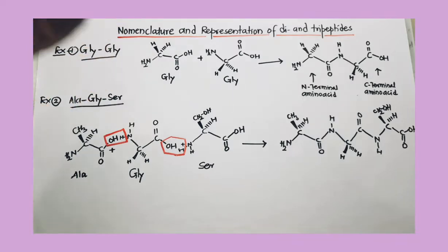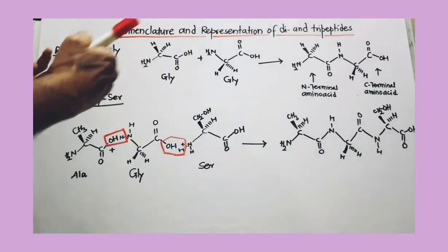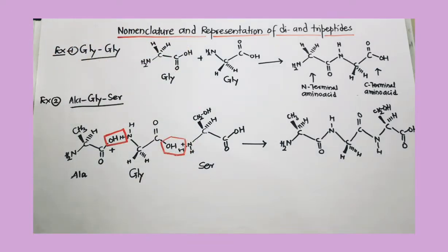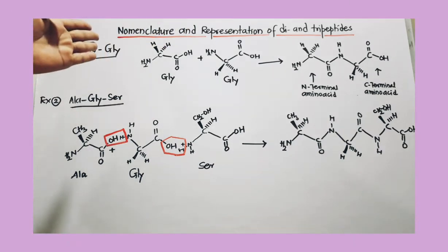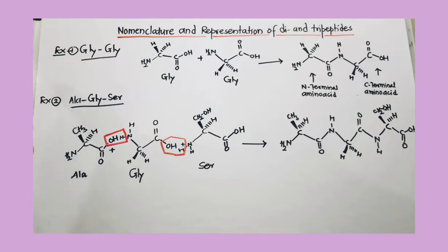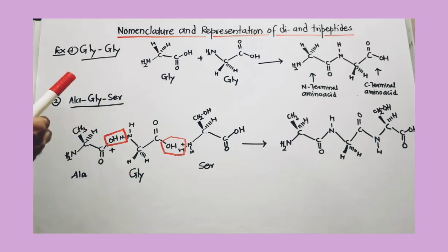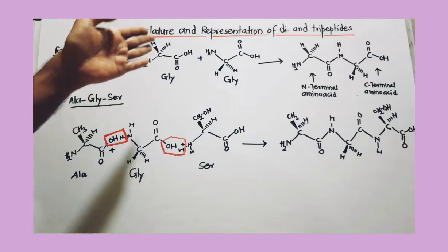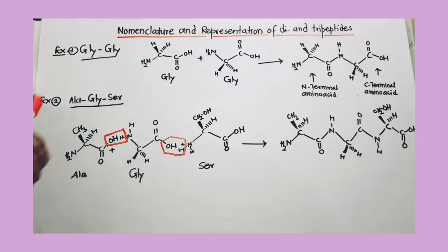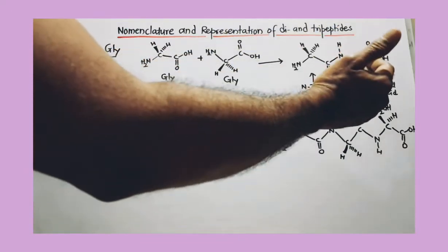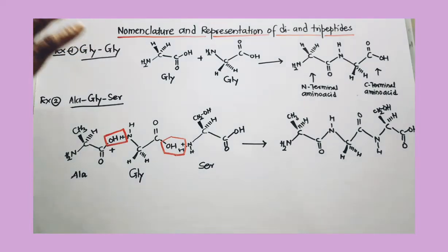When we draw di and tripeptides after formation of the amide or peptide bond, the N-terminal — meaning the amino acid having a free amino group — must be kept on the left-hand side. The amino acid having a free COOH (carboxyl) group must be kept on the right-hand side. So the N-terminal amino acid with a free amino group is always on the left, and the C-terminal amino acid with a free carboxyl group is always on the right.